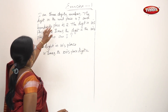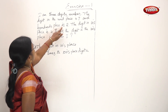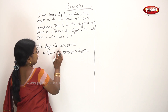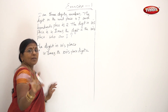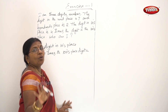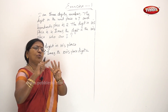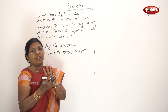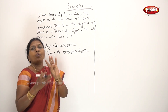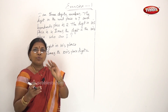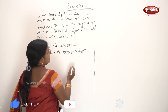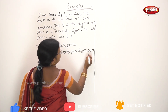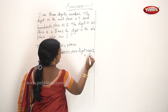What is the hundreds place digit? Two. And we have four times that. Four times two is equal to eight. So the tens digit is eight.